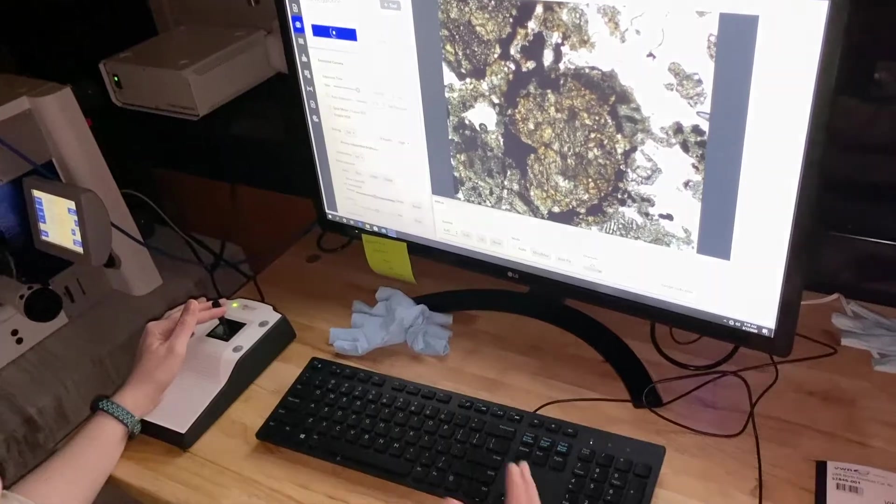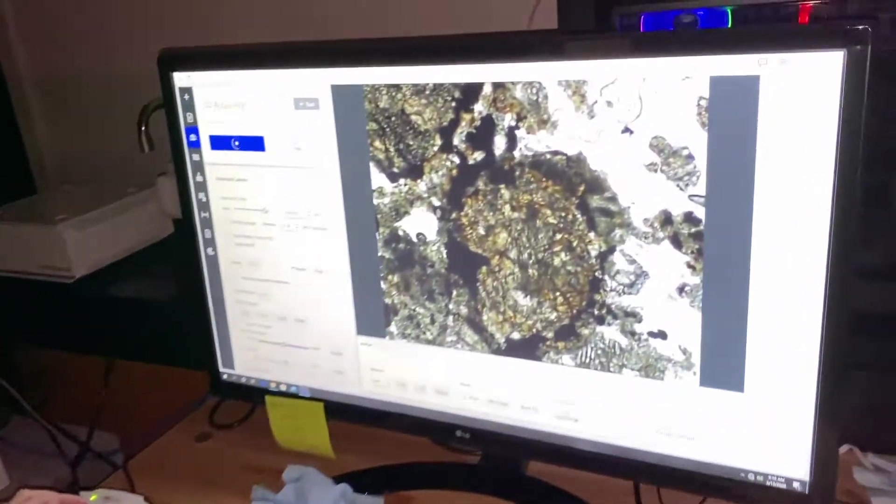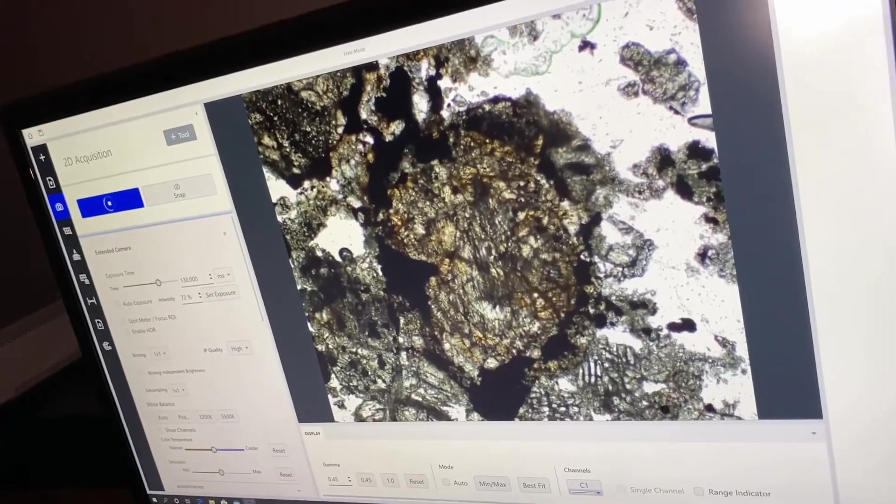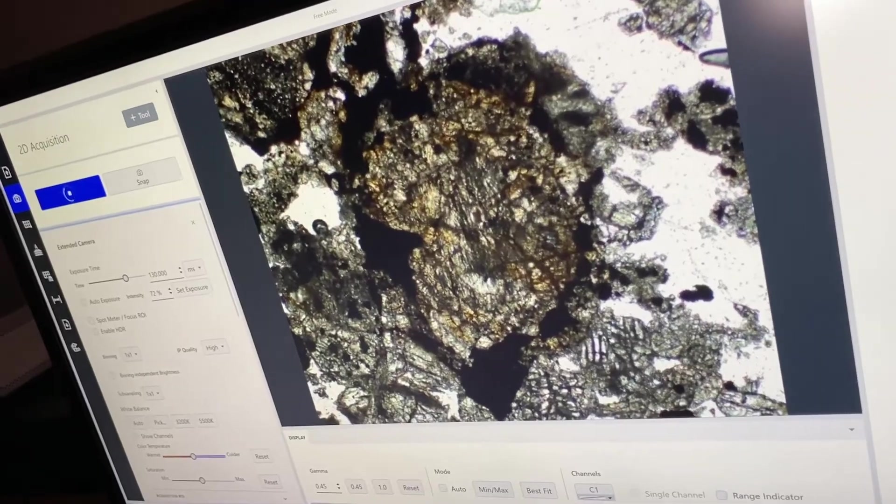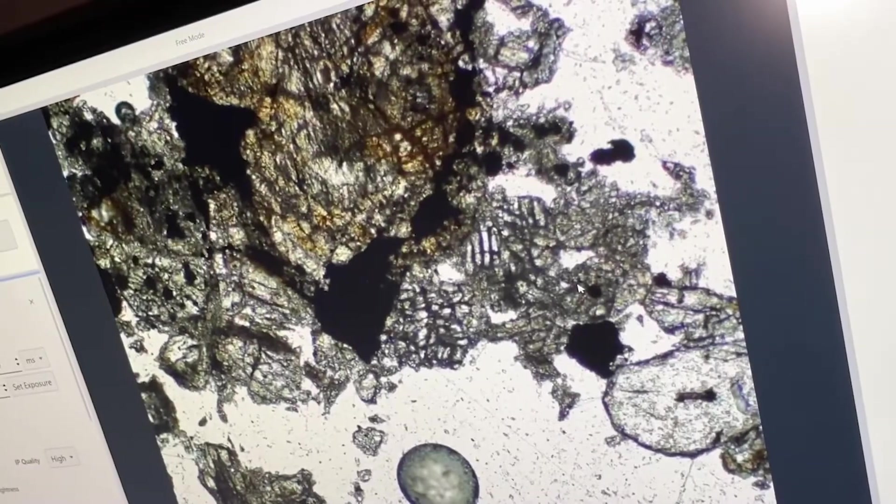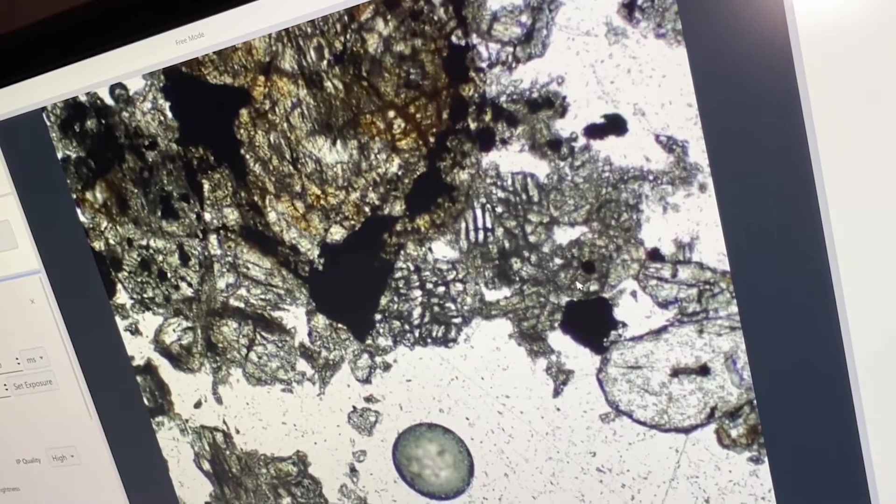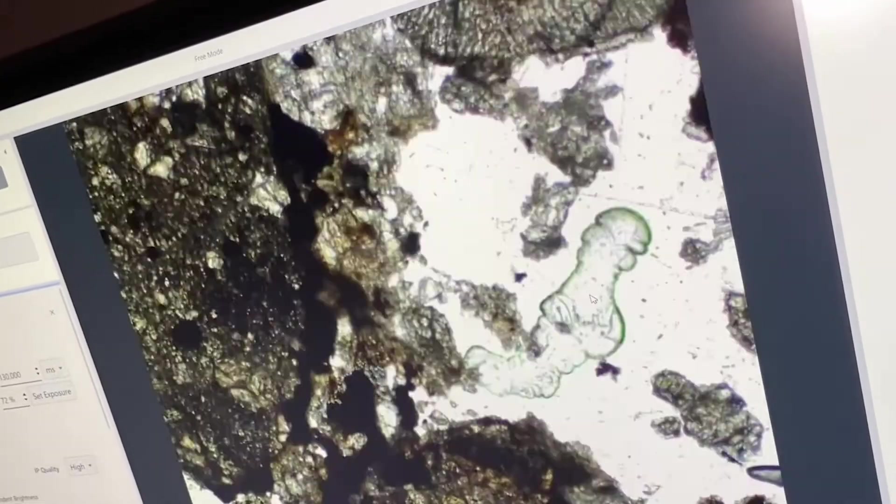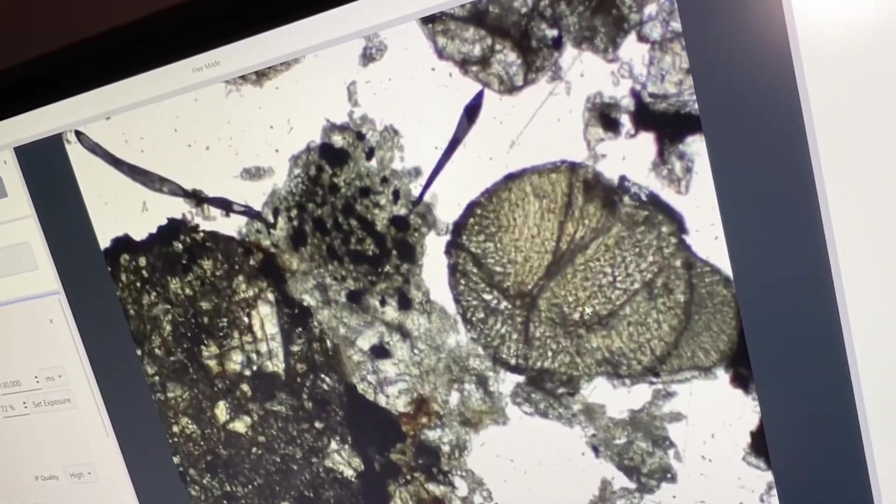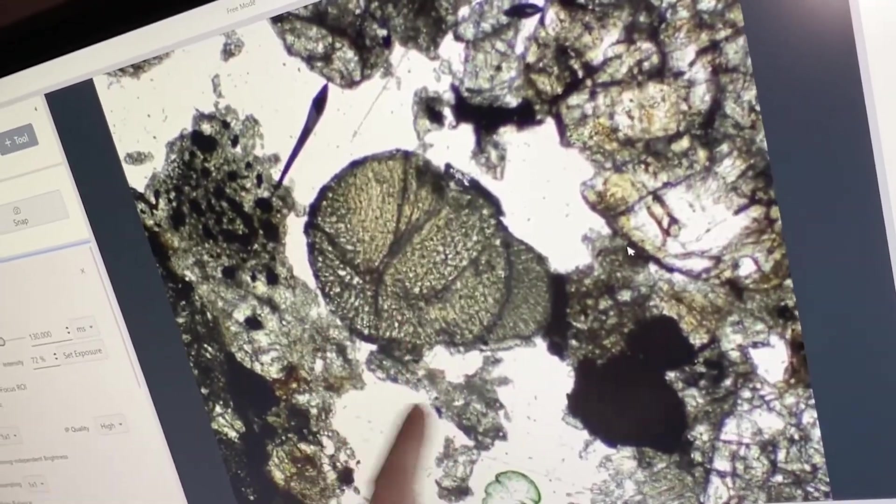I have a few different settings on my microscope that allow me to change the way the light is driven through the sample with the application of some filters and what that does is it gives me a new view of the sample that can help me identify different minerals that are present. Right now we are looking at it in what we call plain polarized light. So everything looks kind of white or round, oh see there we go, look at that. So that is a chondrule.